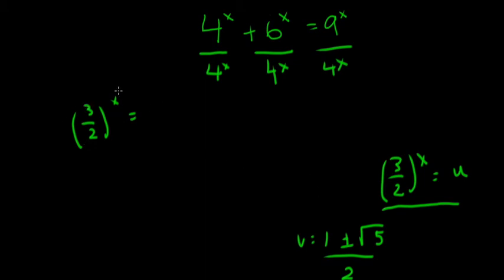Because 3 halves to any power is never going to be negative. Whenever you raise 3 halves, even if it's negative, it'll still be a positive number. It'll just be like a fraction. So we know that it can only be the positive solution of u, which is 1 plus root 5 over 2, because 1 minus root 5 over 2 is negative.